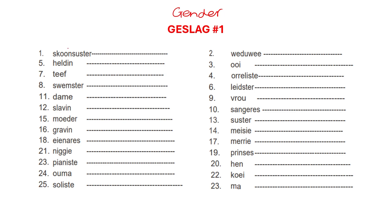So swaarsuster — the opposite of swaarsuster is your sister-in-law, so it will be swaer in Afrikaans, that is swaer. Then we have weduwee — weduwee is a wewenaar, the opposite gender. Then an ooi would be a ram. Then we have oraliste — the opposite gender word would be an oralis.